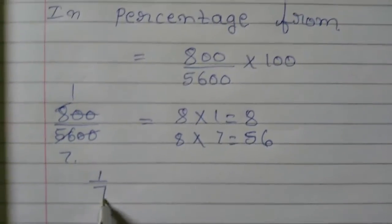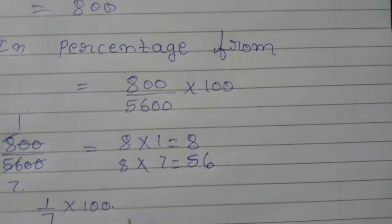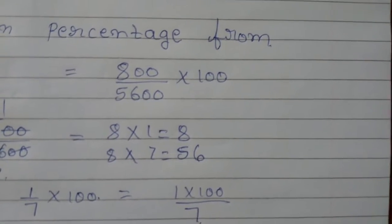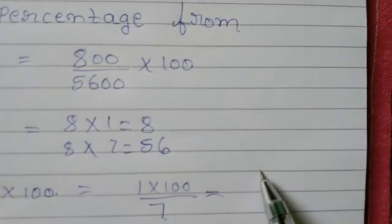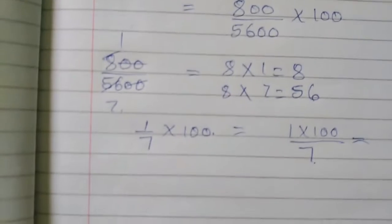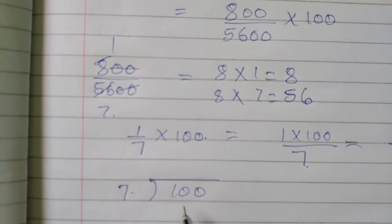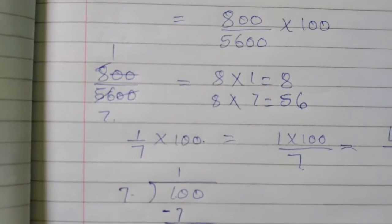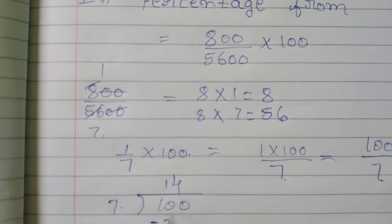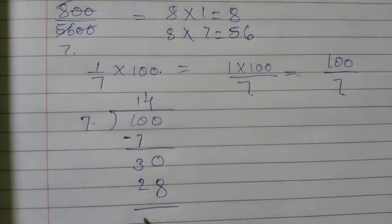Now 1 by 7 into 100. Multiply 1 by 7 into 100. Now convert: division 7 divided by 100. 7 fours are 28, remaining 2.